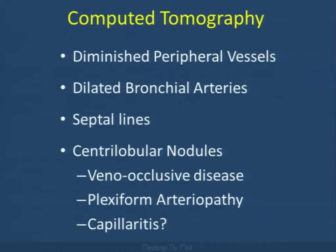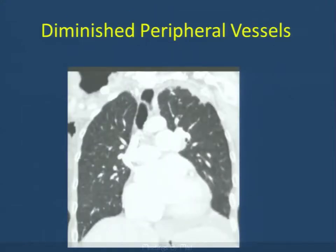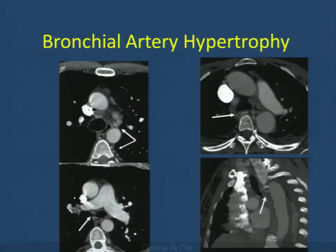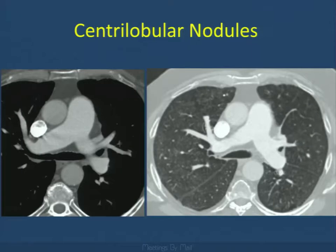CT will also show diminished pulmonary vessels, sometimes with dilated bronchial arteries, and then septal lines. Some of the more rare conditions may be associated with centrilobular nodules — conditions such as veno-occlusive disease, plexiform angiopathy, or capillary arteritis. Diminished pulmonary vessels are often better shown on reconstructed images, and bronchial arterial hypertrophy can occur for a variety of causes, often seen with chronic thromboembolic disease.